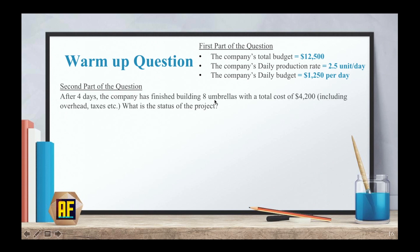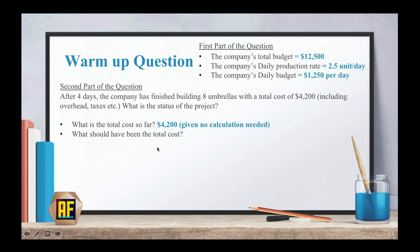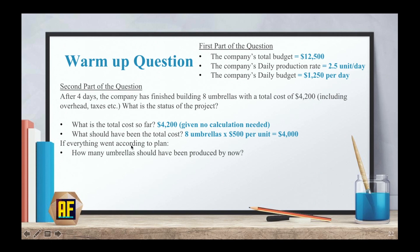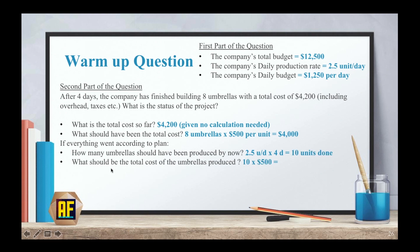After 4 days, the company has finished building only 8 umbrellas, with a total cost of $4,200, including taxes. The total cost so far is $4,200. What should have been the total cost? We have 8 umbrellas times $500 per unit, which equals $4,000. If everything went according to plan, how many umbrellas should have been produced? We know we generate 2.5 units per day times 4 days, so 10 units should have been made. That gives a planned cost of 10 units times $500, which is $5,000.